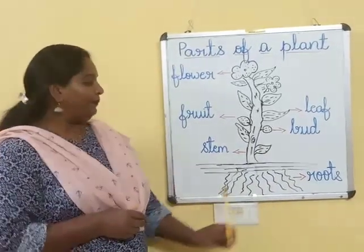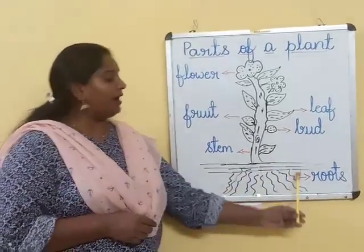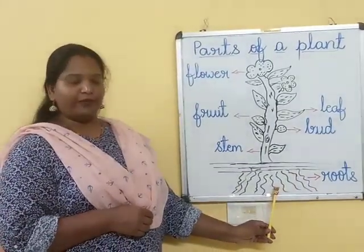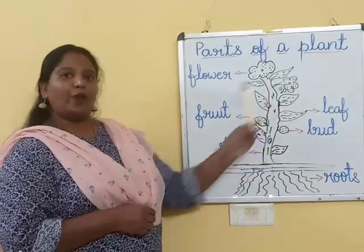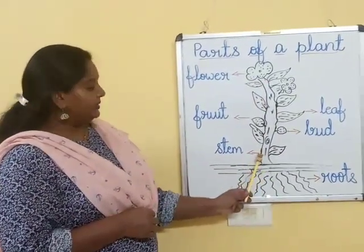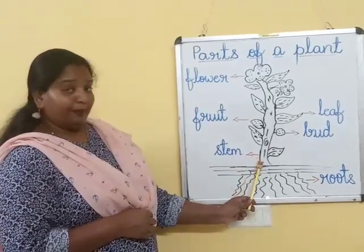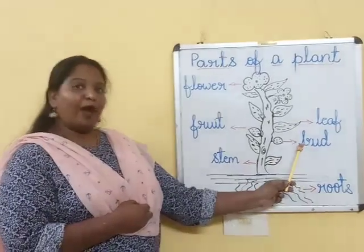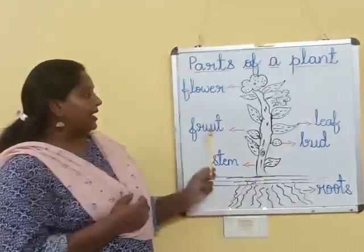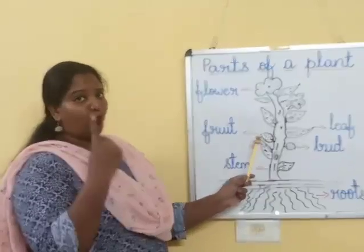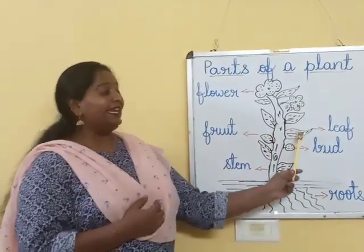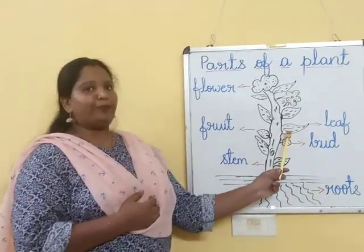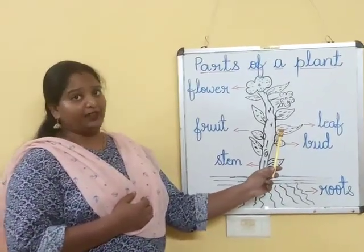Now a quick recap. The parts which are under the ground are known as roots. Roots take water from the ground and supply it to various parts of the plant. Now above the soil, the stem holds firm on the ground. This is a bud — from a bud, a flower grows. Now a fruit: a fruit has one or many seeds in it. Leaf is also known as the kitchen of the plant because it prepares food for the plant, which helps it to grow.